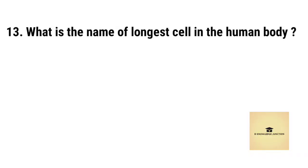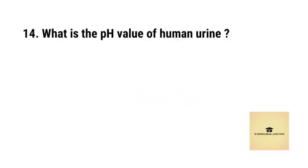What is the name of the longest cell in the human body? Right answer is nerve cell. What is the pH value of human urine? Right answer is 6.